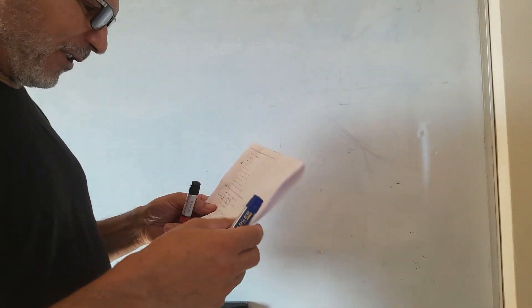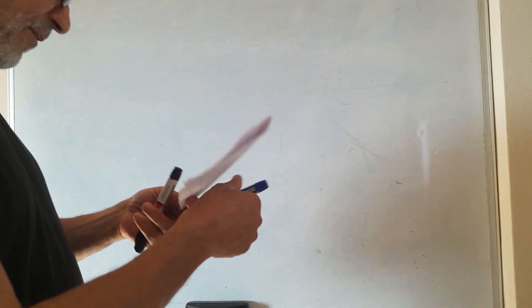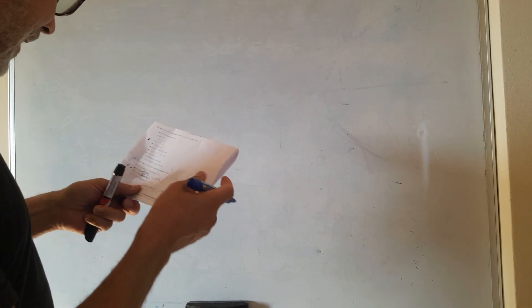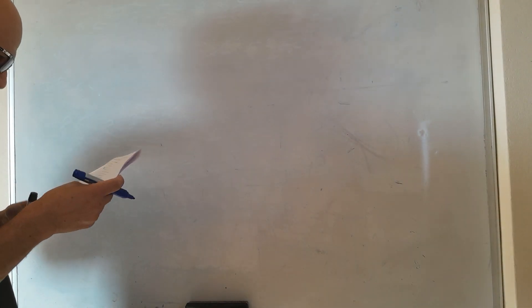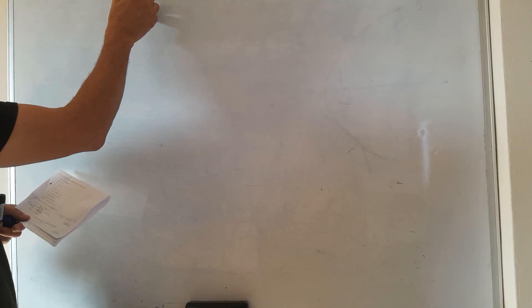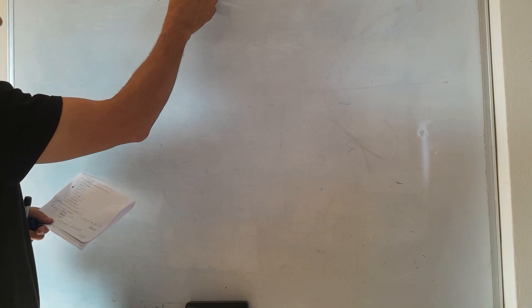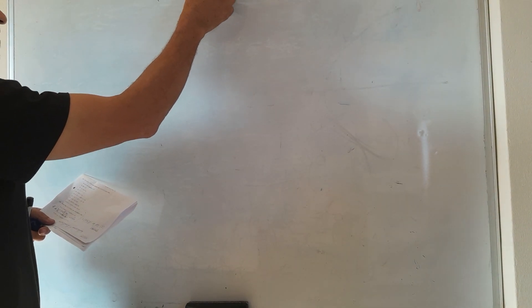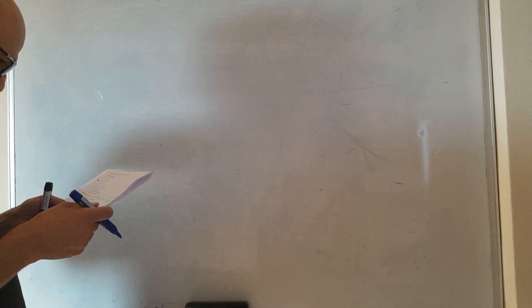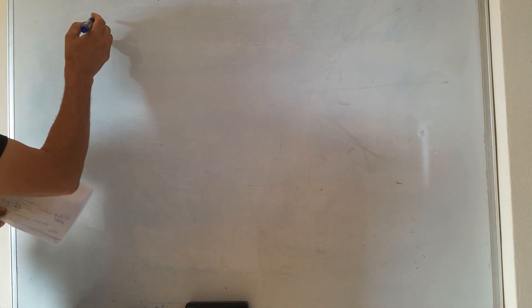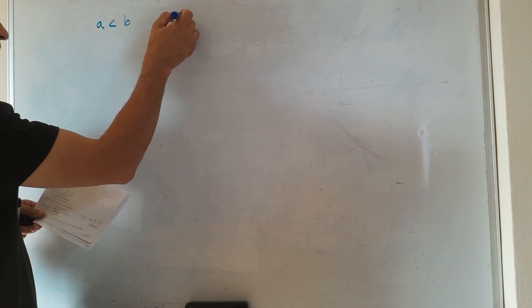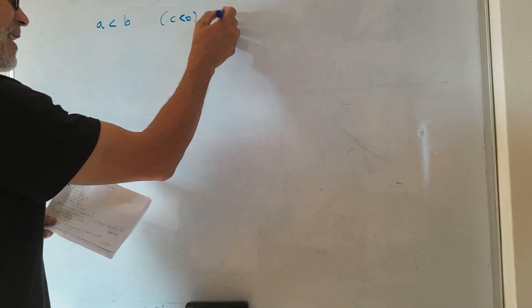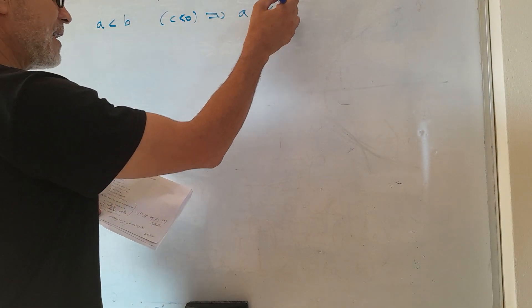Hello everybody. The second exercise is about inequalities and inverses. Let a, b, c be real numbers. Prove that if a is less than b and c is negative, then ac is greater than bc.